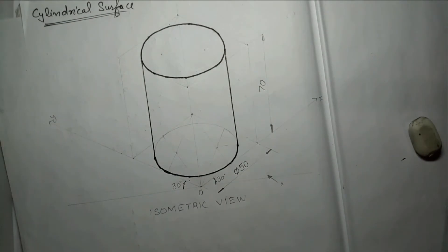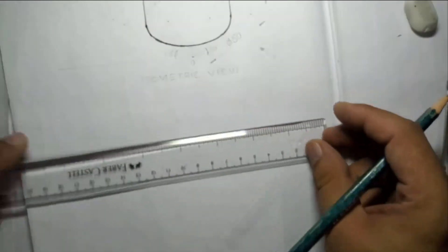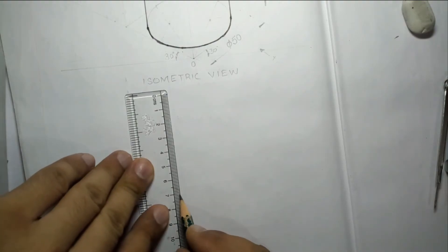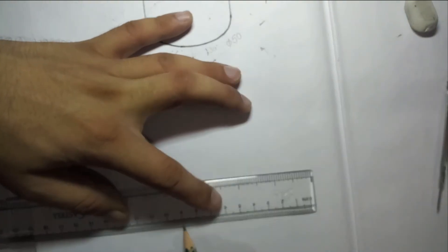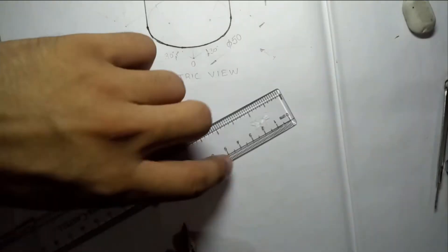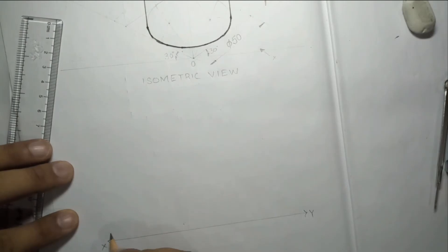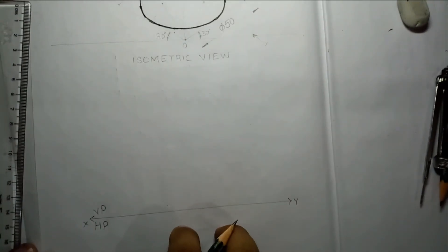Now we will solve this question. The same procedure as other questions: first draw the orthographic axis. I need a space of 70 here and 50 for the solution. I'm making the orthographic axis — this is the XY reference line. As I'm making the diagram in the first quadrant, the top view will be below XY and the front view above. If it were the third quadrant, the top view would be above XY.